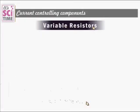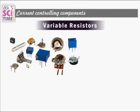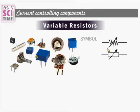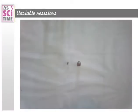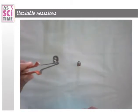The next current controlling component is the variable resistor. A number of variable resistors are shown here. Their symbol is the same as the resistor symbol but with an arrow indicating it is variable. Resistance can be adjusted by turning a shaft by hand. When resistance increases, the current flow through the circuit decreases. Watch this video about variable resistors.